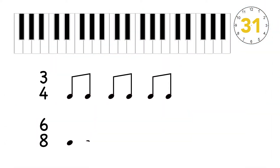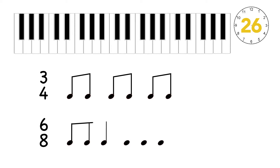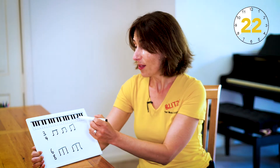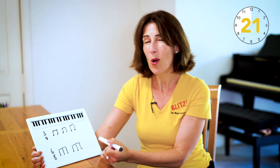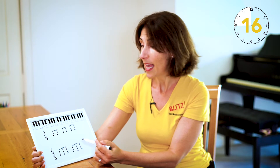The thing about 6/8 is that there are six quaver beats in the bar, but they are not grouped in twos. They're grouped in threes and this makes a big difference. So 3/4 and 6/8, whilst they're mathematically the same because they have the same number of quavers, the grouping is completely different.